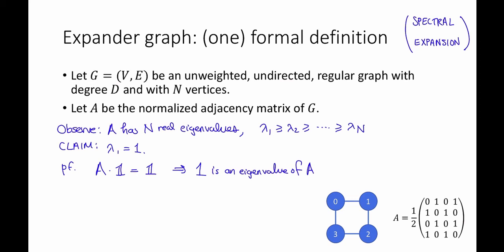On the other hand, for any eigenvalue-eigenvector pair, so if A times V is equal to lambda times V, then if we take the L infinity norm of both sides, what we get is that lambda times the L infinity norm of V is equal to the L infinity norm of A times V.